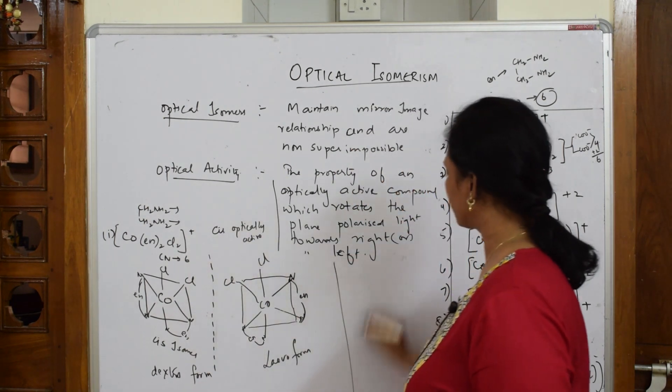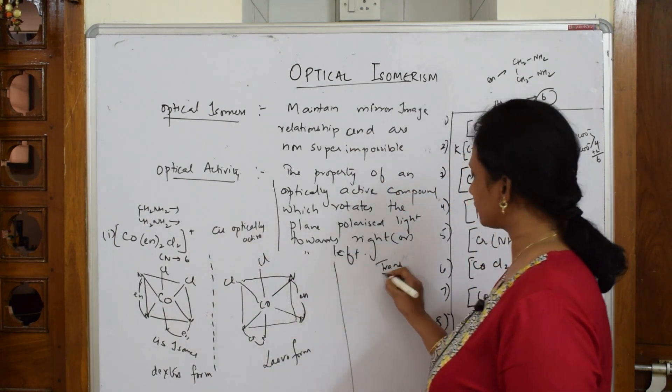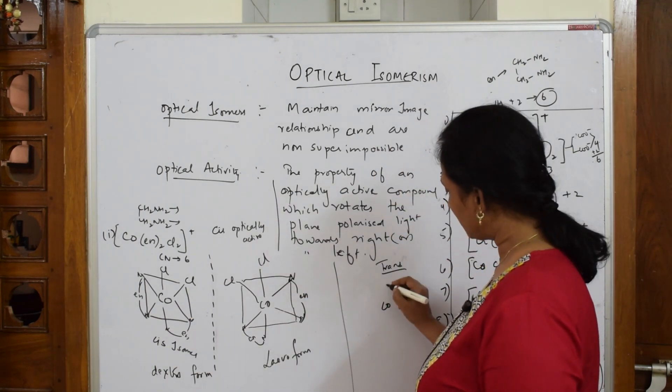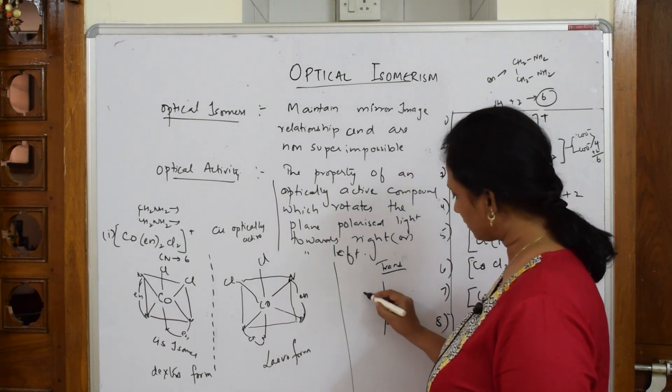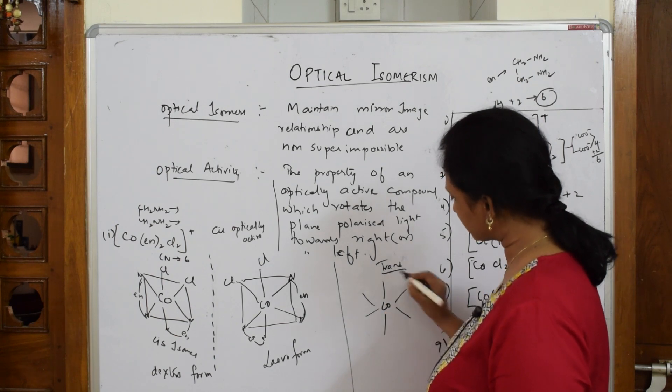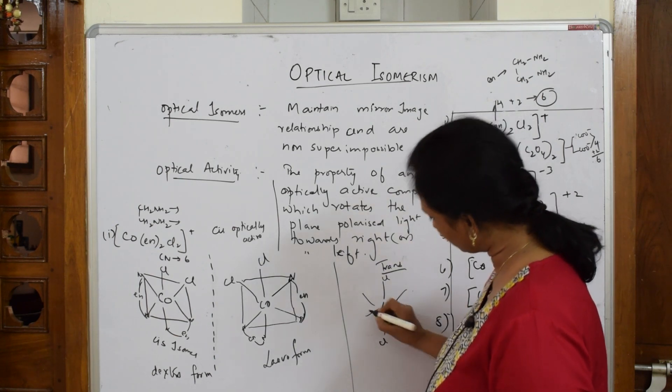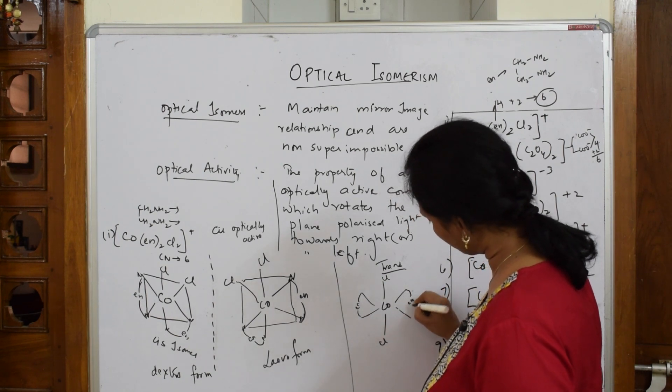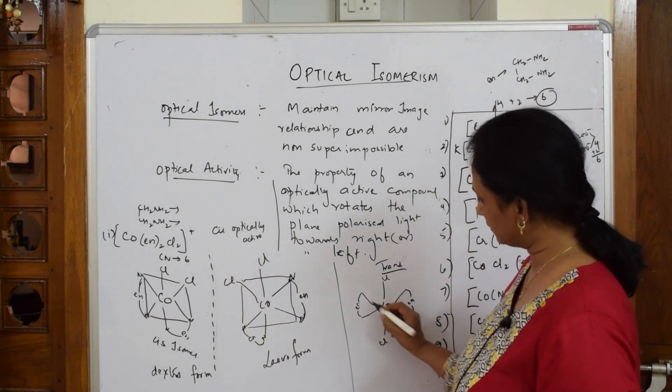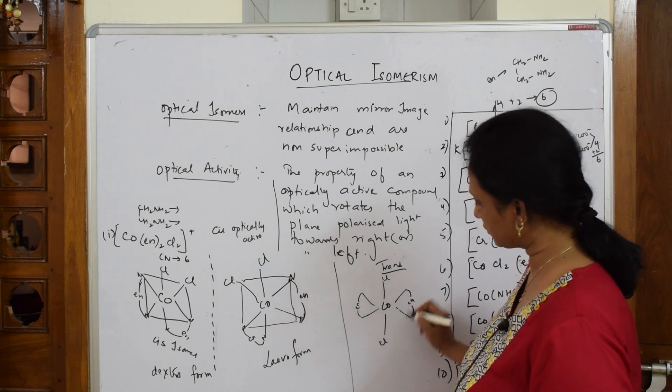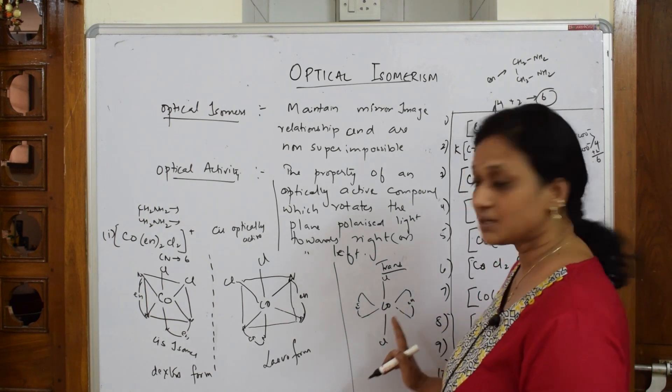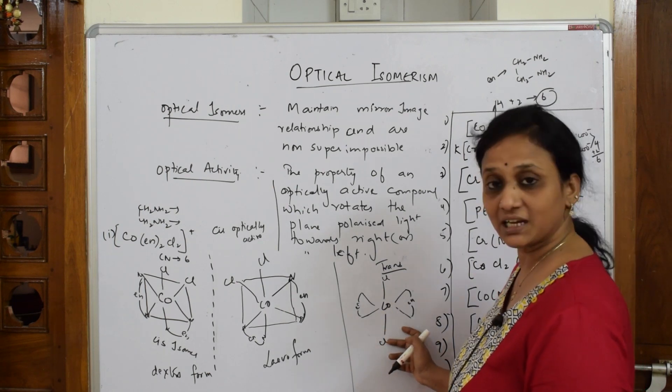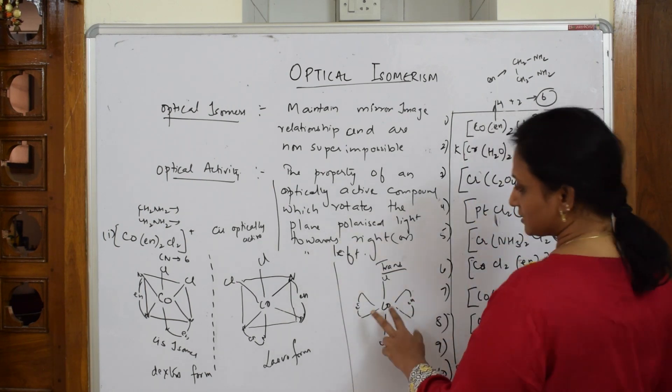Let us draw trans form now. When I have to draw the trans form - the same thing, cis trans should be opposite. Co: one, two, three, four, five, six. Now one chlorine here, one chlorine here, one en here, one en here, one en here. Now see here, this is again - nitrogen, nitrogen, nitrogen, nitrogen, nitrogen.